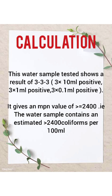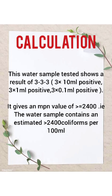Calculation: This water sample test shows a result of 3-3-3, i.e. 3 × 10 ml are positive, 3 × 1 ml are positive, and 3 × 0.1 ml are positive. It gives an MPN value of greater than or equal to 2400. That is, the water sample contains an estimated greater than 2400 coliforms per 100 ml.